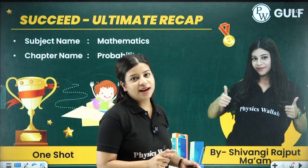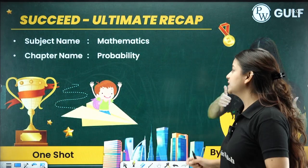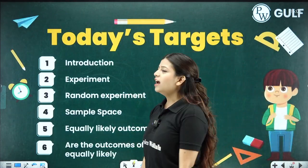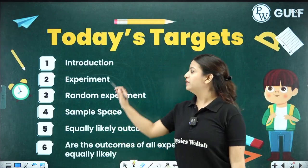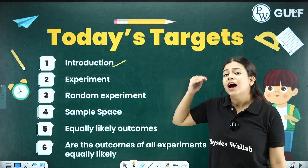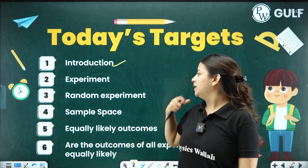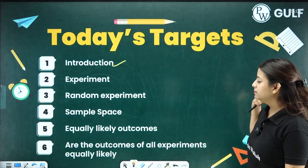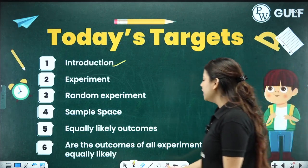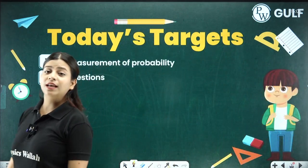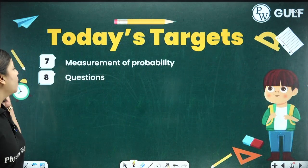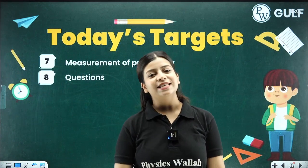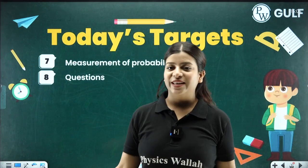Let's start by seeing what we are going to discuss and what are our topics for today's target. We are going to go ahead with the introduction to probability, along with what is experiment, random experiment, sample space, equally likely outcomes, whether outcomes of all experiments are equally likely, the measurement of probability, and some really important questions.